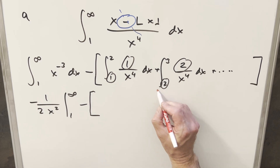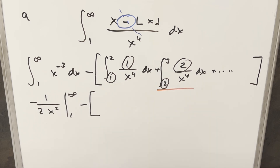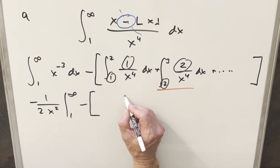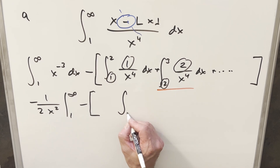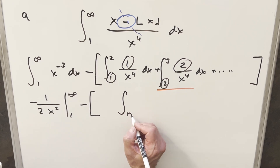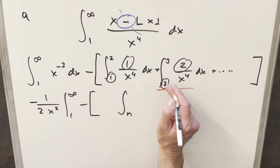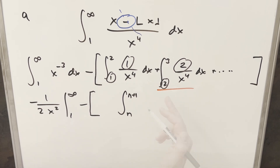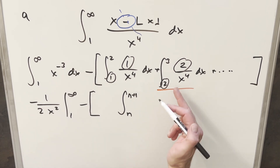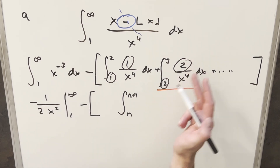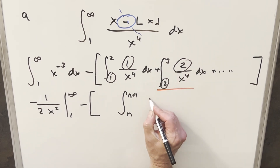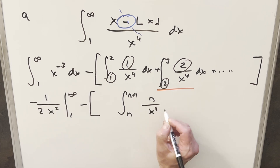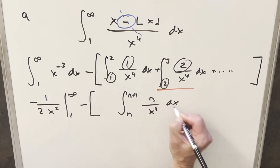In each case, we're going to be integrating from some value n, and the upper bound is just going to be n plus one. The value of the numerator is going to be the same as the lower bound, so we end up with n over x to the fourth dx.